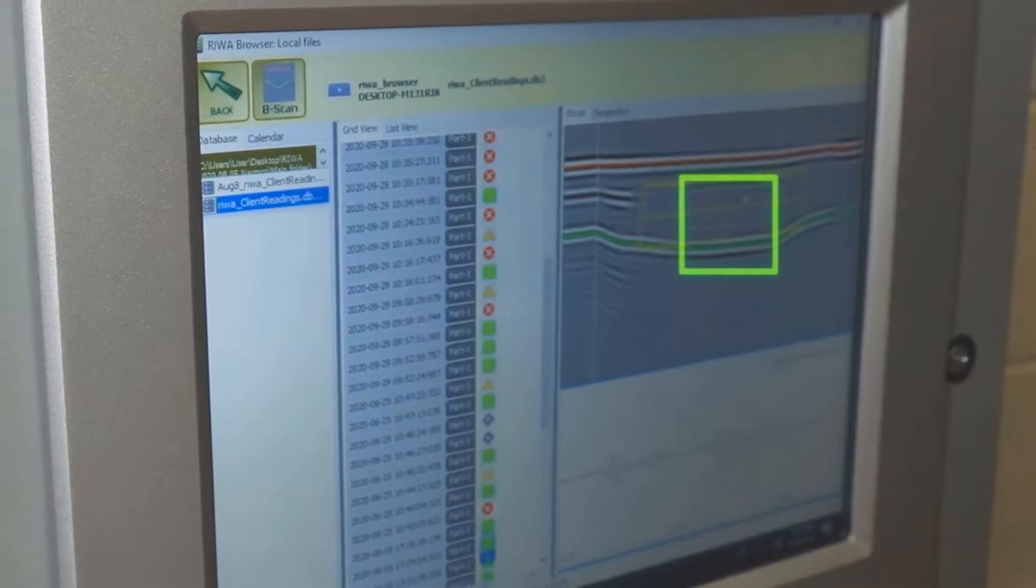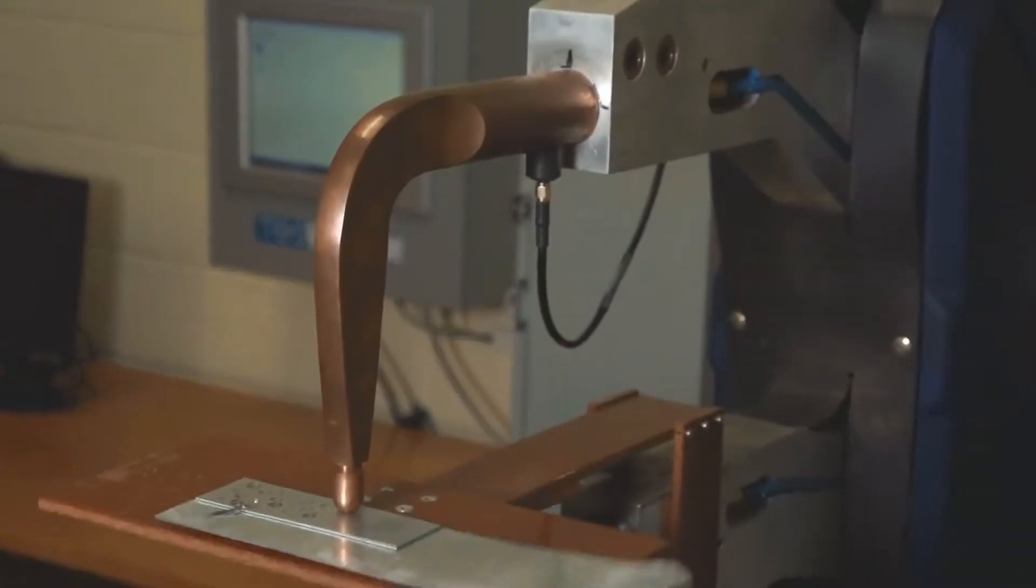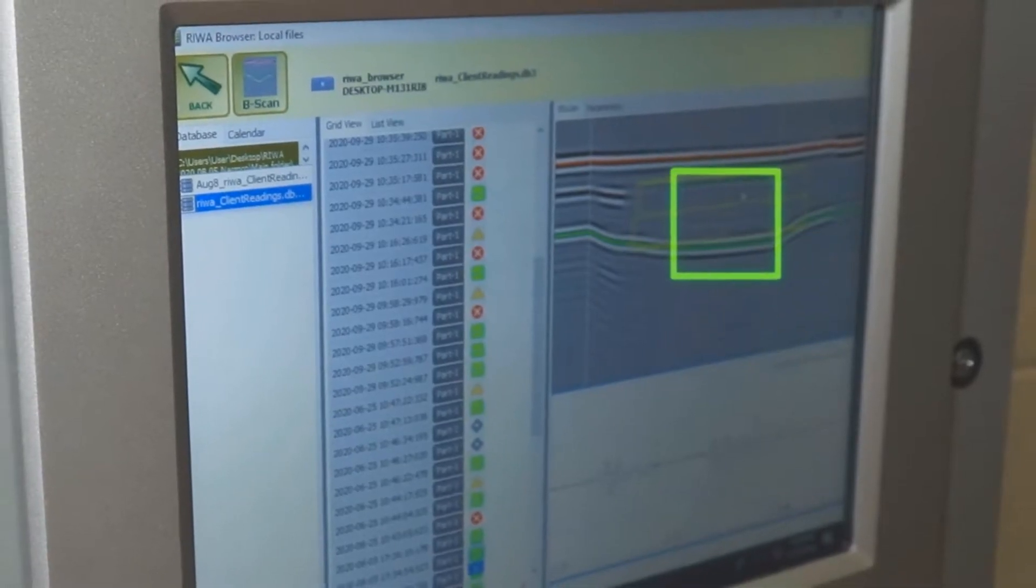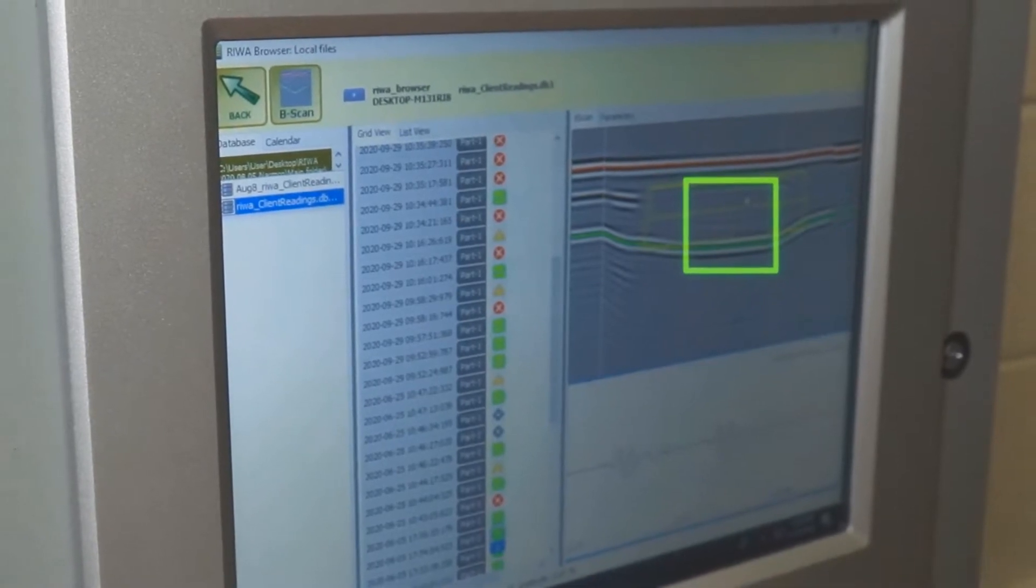If the AI determines the weld is good, it will pass it. The system will operate in a similar manner with a weld that does not pass quality control and will issue a warning for that particular weld.